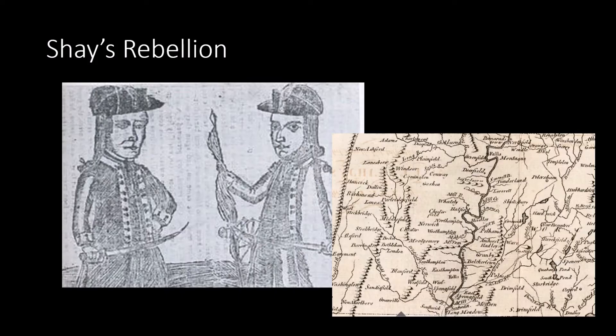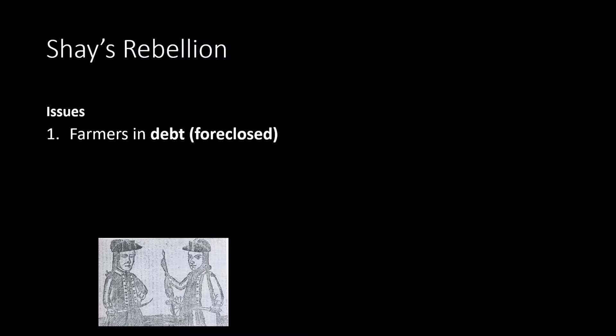Then we get to Shays' Rebellion — a domestic issue that breaks out in western Massachusetts, right in our own neighborhood. You can find your own town on that map. Starting around 1786, a group of farmers in western Massachusetts rose up, took over some courthouses, starting out in Great Barrington and moving east toward Springfield. Eventually, somewhere between Springfield and Worcester, they were captured and suppressed.